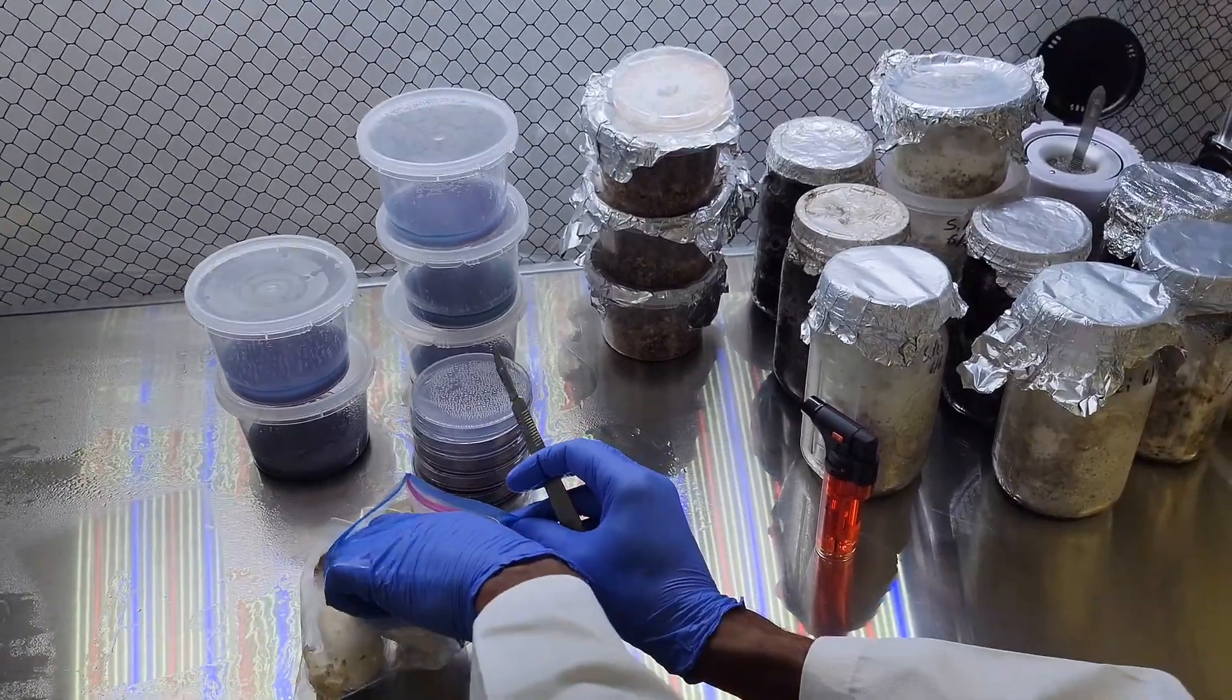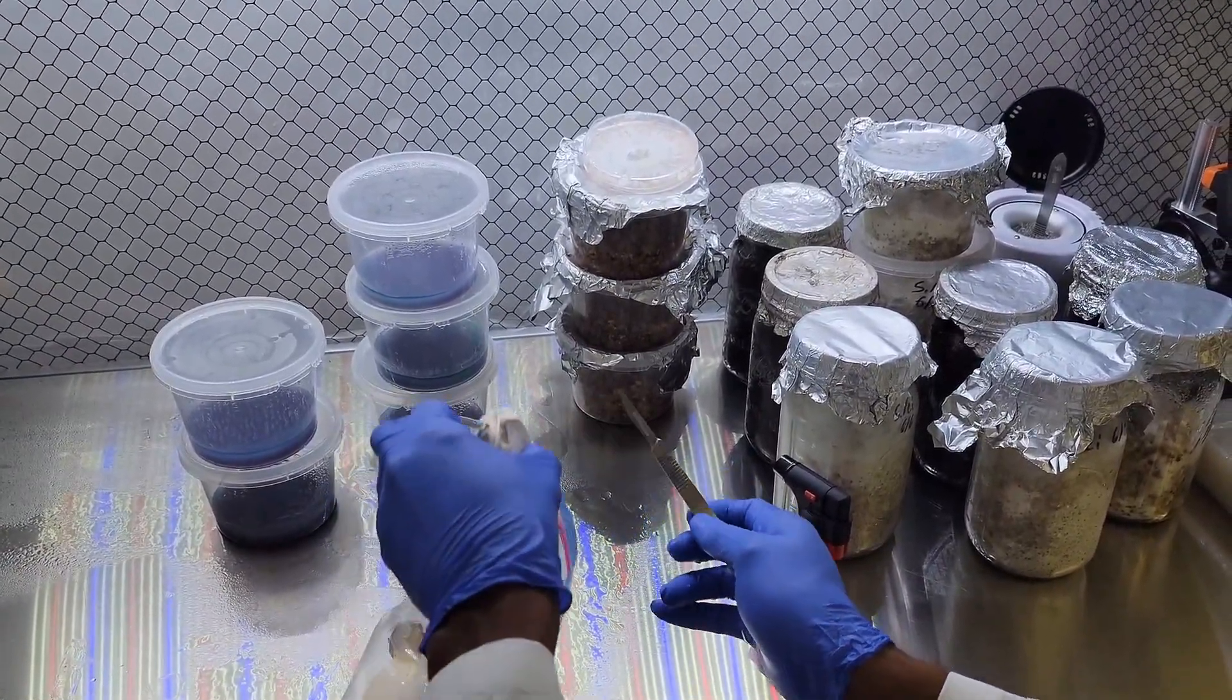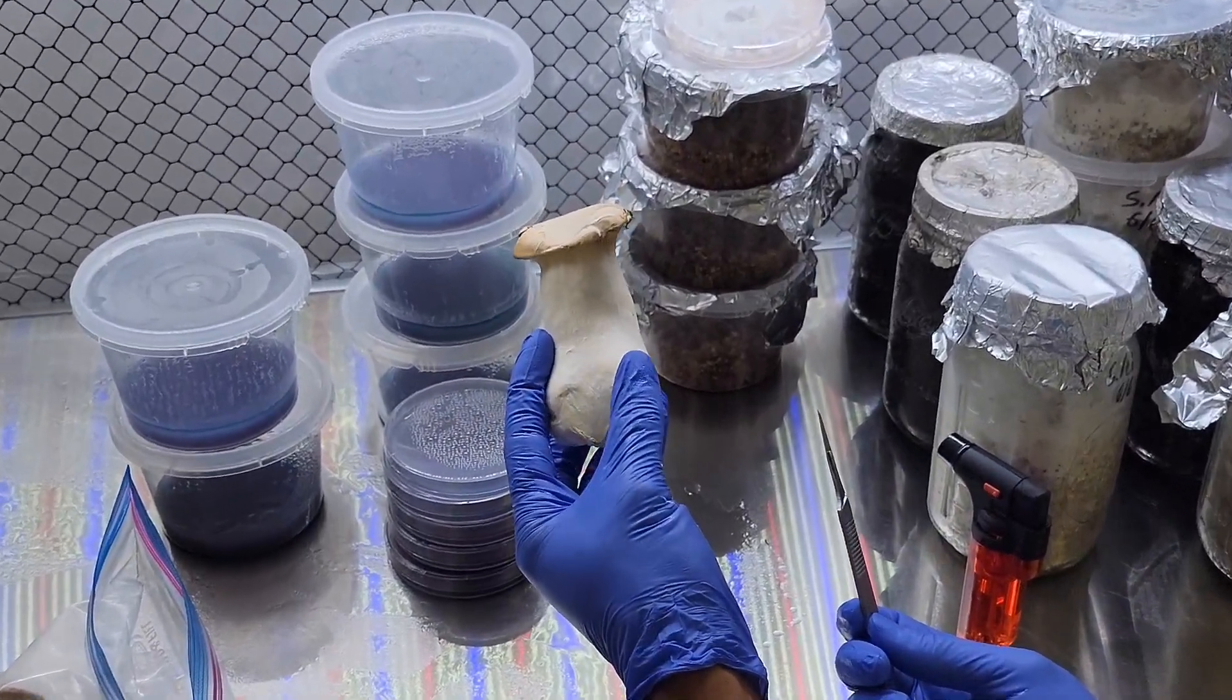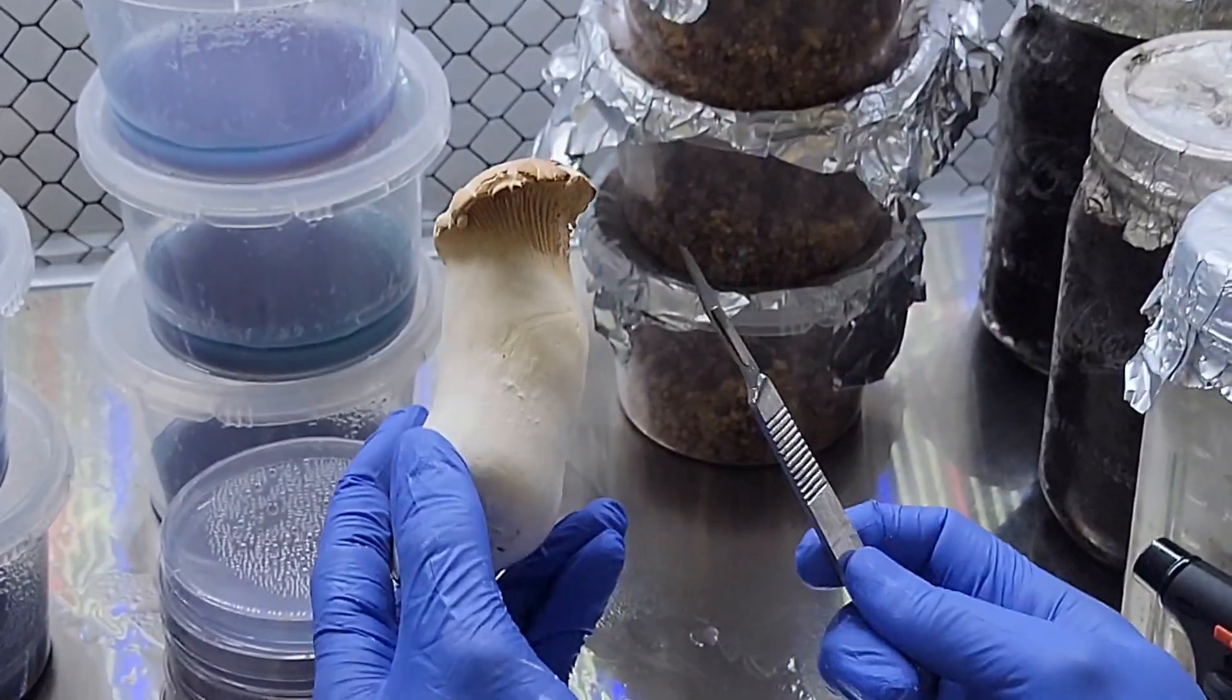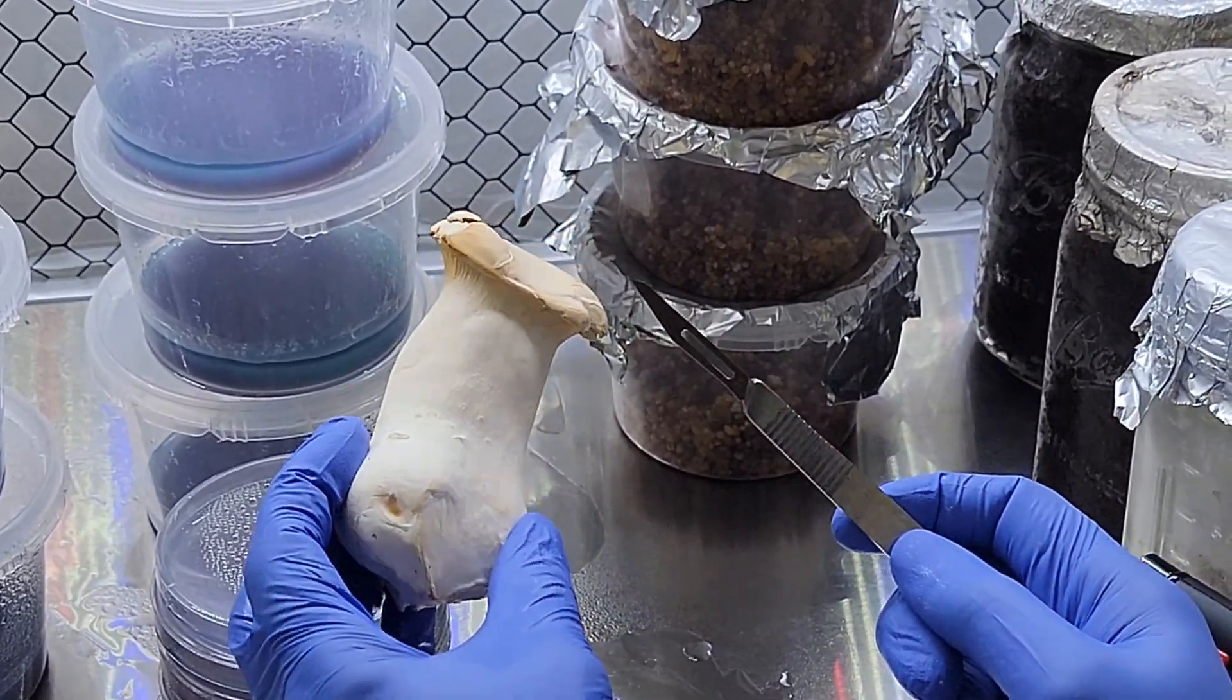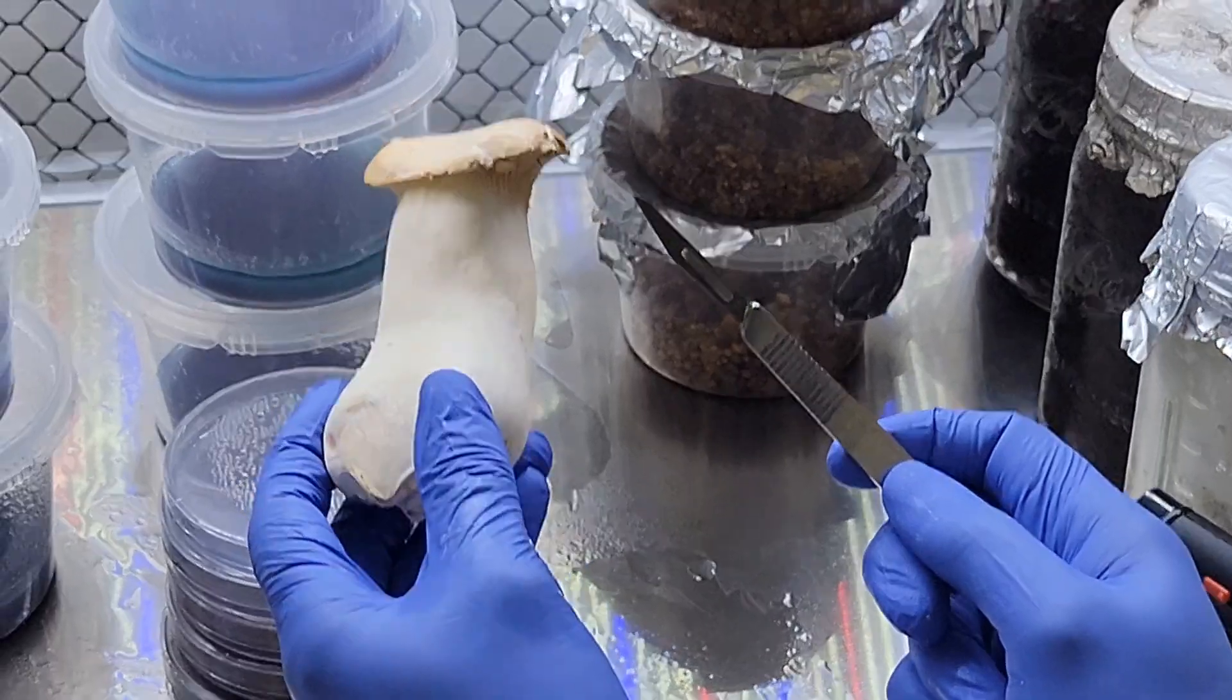This is agar and grain water, so there's no honey in this like in our previous recipe. We're just going to be using grain water to prep them to go onto grain, so they'll already know how to break it down.